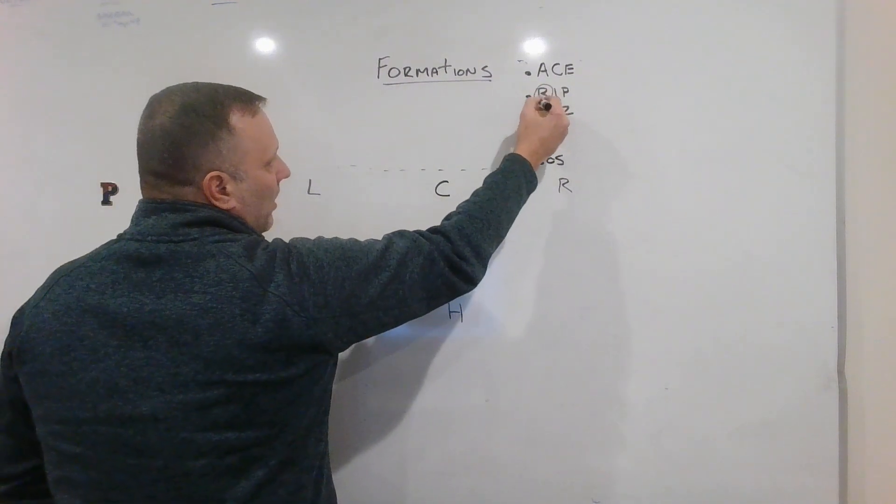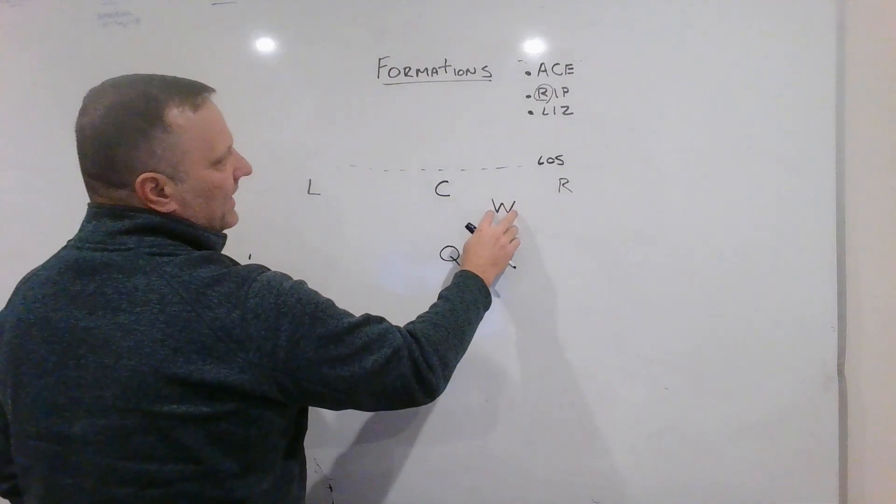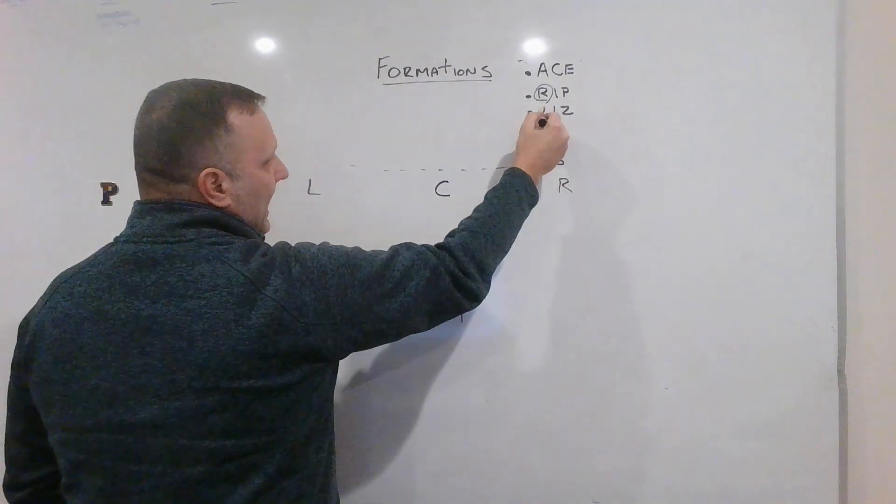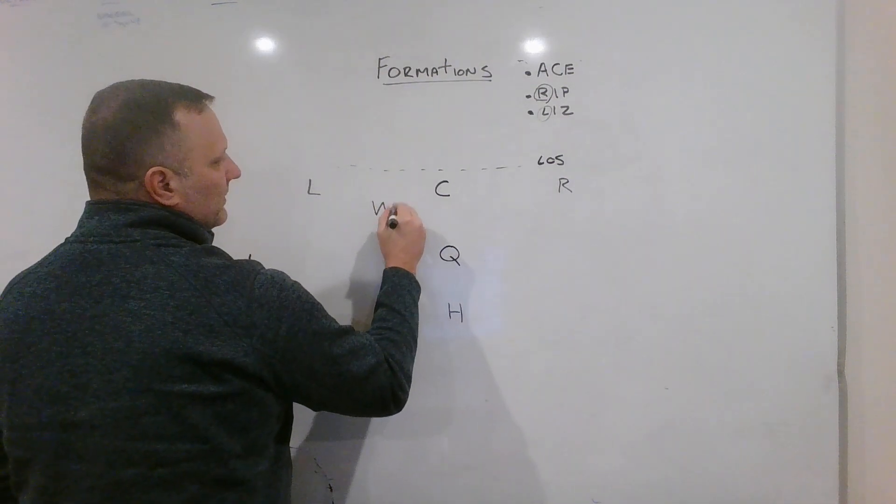So that is RIP. And the R, right, stands for that wing being to the right. And then LIZ, L for LIZ, wing just goes to the left.